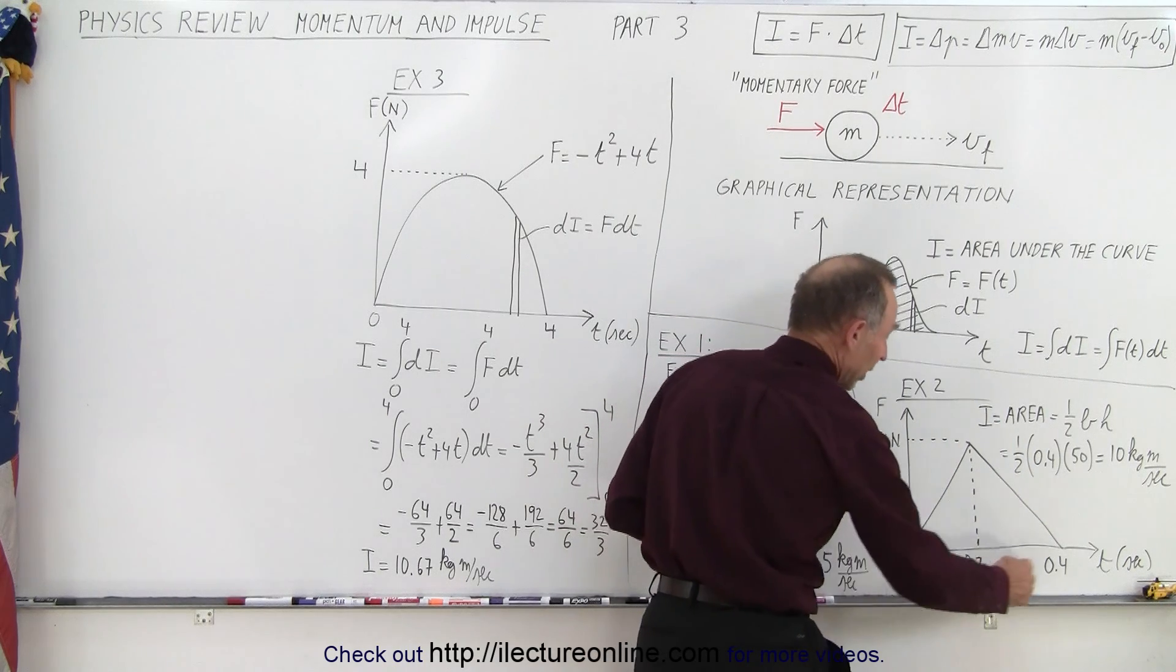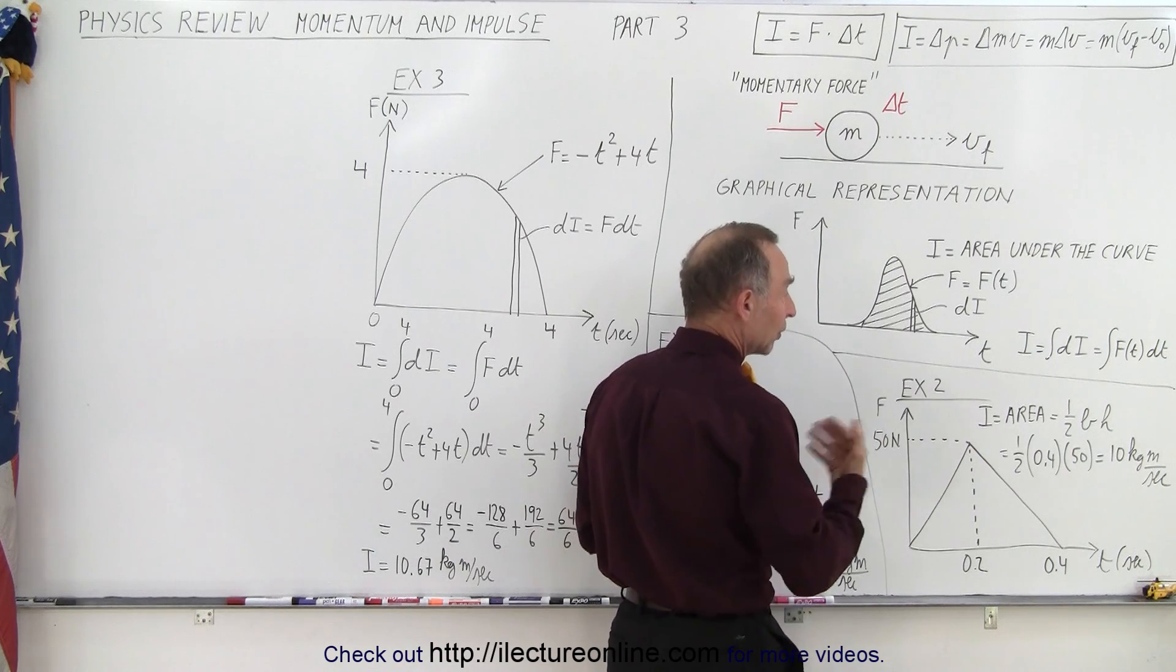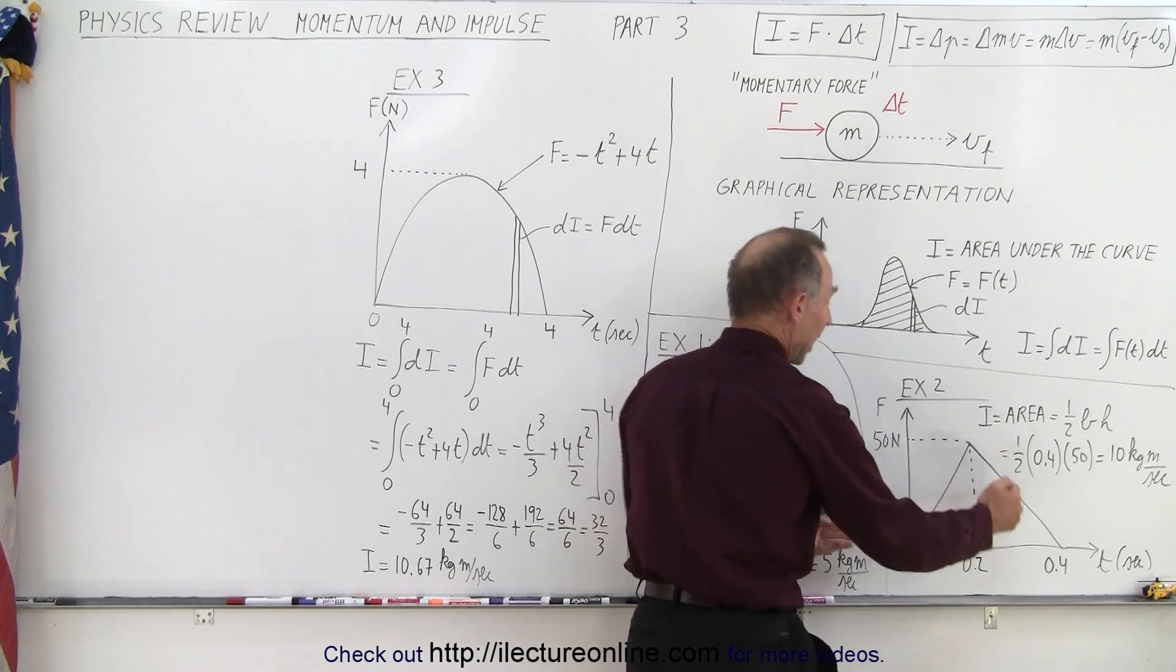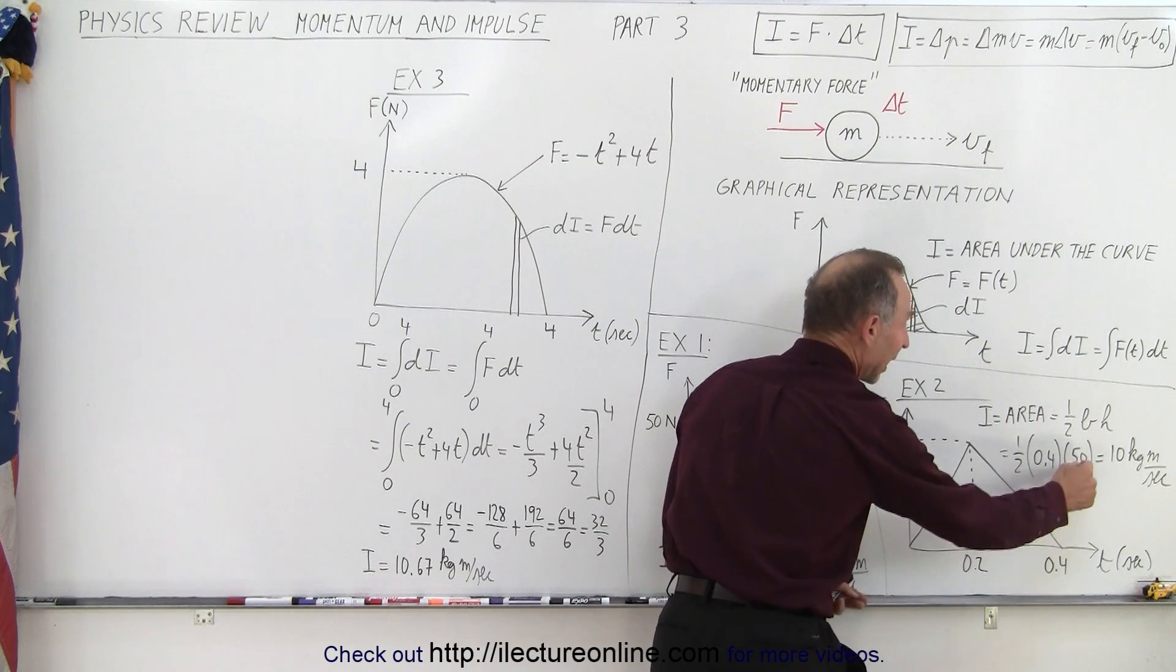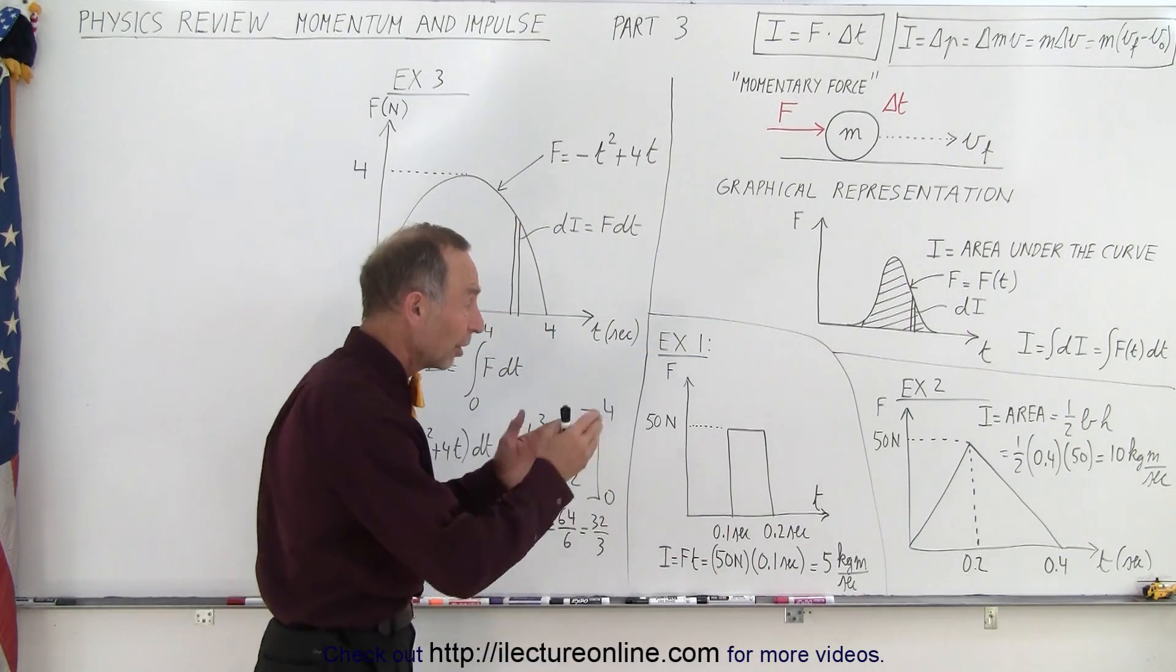Notice that the width of the triangle at the bottom on the base is 0.4, the height is 50 Newtons. So the area would be one half the base times the height, one half 0.4 times 50, which is 10 kilogram meters per second for the impulse under that circumstance.